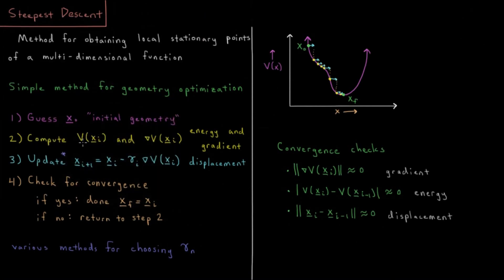Then we compute the energy of our system at those coordinates and the gradient of the energy. We use that information to update our coordinates, which I indicate as X — a vector of all 3N molecular coordinates. Our new coordinates are our old coordinates minus some value gamma times the gradient of the energy. This gamma is a scalar value representing how far we are displacing in the direction of decreasing energy. Remember, the gradient points toward the direction of most increasing energy, so the negative gradient is the direction of quickest decreasing energy, and gamma is how far we step in that direction.